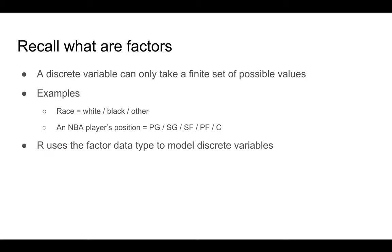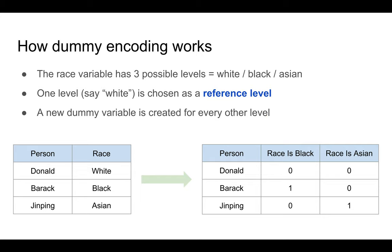I'm now going to talk about factors and dummy variables. Remember that factors are used in R to model discrete variables. A discrete variable can take basically only a finite set of possible values compared to continuous variables, which can take positive or negative values, or values from zero to infinity. For example, race or MBA position, there are only a few possible values that this discrete variable can take.